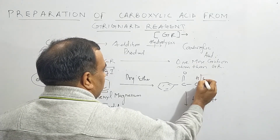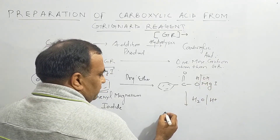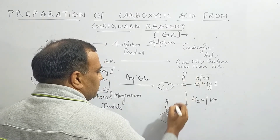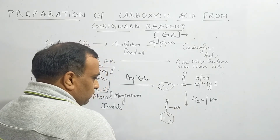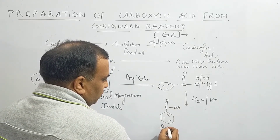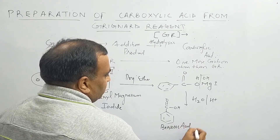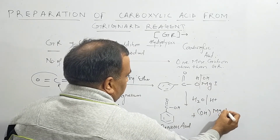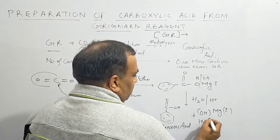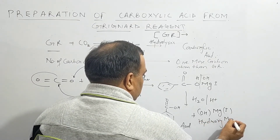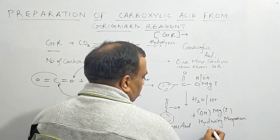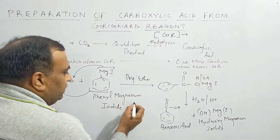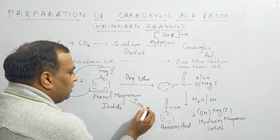On hydrolysis, H adds here and OH adds there, giving benzoic acid (C₆H₅COOH) plus hydroxy magnesium iodide (HOMgI). So we have converted phenyl magnesium iodide to benzoic acid. Again, there is an increase of one carbon atom in going from the Grignard reagent to the carboxylic acid.